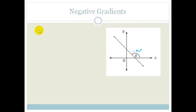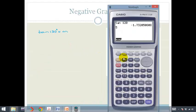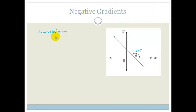So then we'd say tan of 130 degrees is equal to m and then we'd pop it in our calculator. We'd go tan of 130 degrees is equal to minus 1.19. So the gradient for this would be minus 1.19.